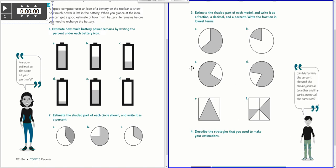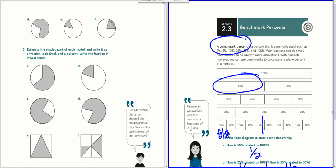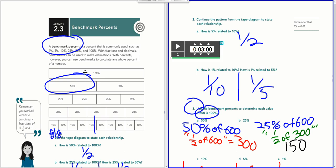And then we translate these shapes into a tape diagram, a bar model if you will, where a whole rectangle is 100%.